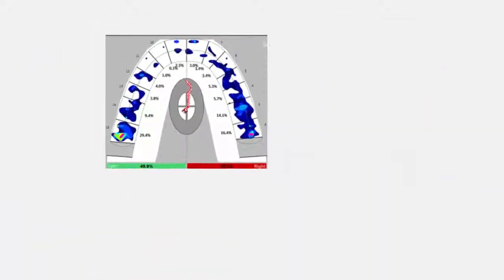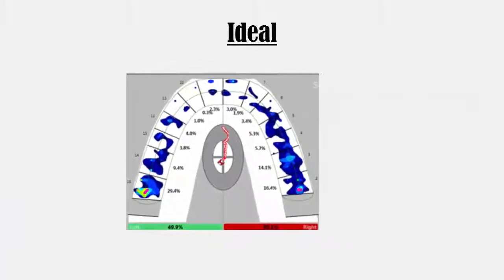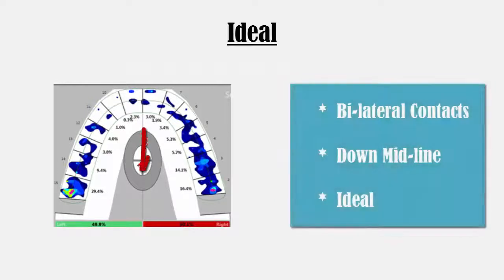The first example shows an ideal center of force which starts in the center and moves down the midline of the arch. This pattern illustrates early anterior contact followed by equal bilateral posterior contacts.